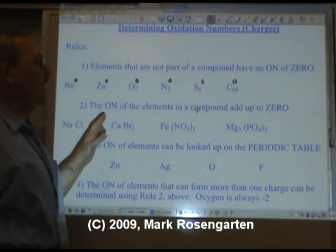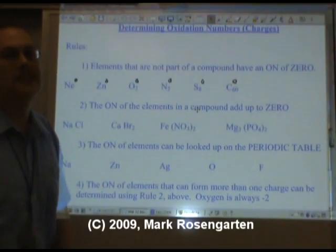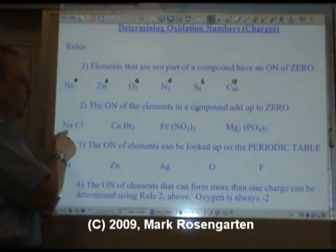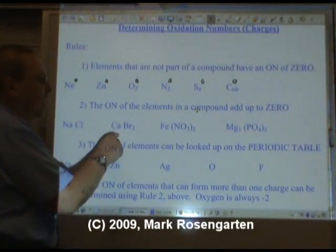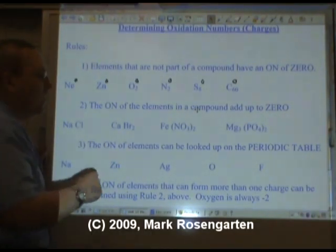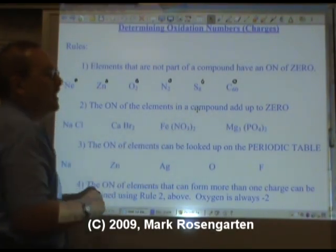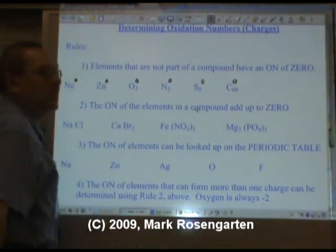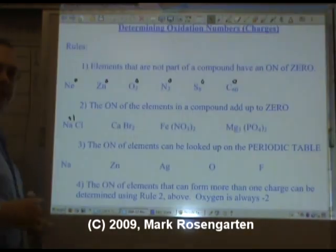The oxidation numbers of the elements in the compound add up to zero. You already know this. This is how you wrote chemical formulas to begin with. So whatever sodium is, chloride has to be the same size charge but opposite. Whatever calcium is, bromide has to have half its charge because it takes two of them to cancel out the calcium. According to the periodic table, sodium has a charge of plus one when it's in a compound. Therefore, chloride has to be minus one for them to cancel out.